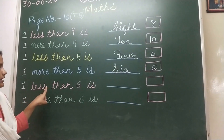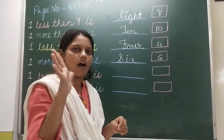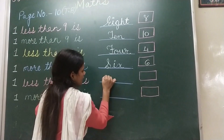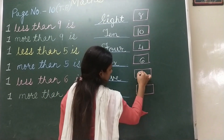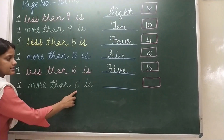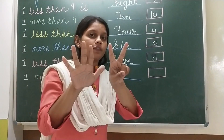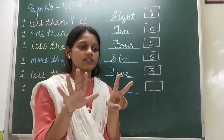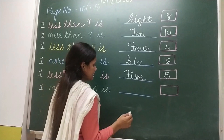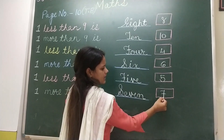Next: 1 less than 6. 6 and 1 less — less means cut. How many fingers left? 1, 2, 3, 4, 5. Write FIVE — 5, and number 5 in the box. Next: 1 more than 6. Show 6 fingers and add 1 more. How many fingers? 1, 2, 3, 4, 5, 6, 7. 1 more than 6 is 7. Write SEVEN — 7, and number 7 in the box.